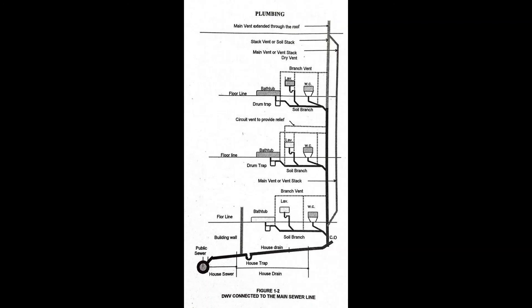Water distributing pipe in a building or premises is a pipe that conveys water from the water service pipe to the plumbing fixtures and other water outlets.